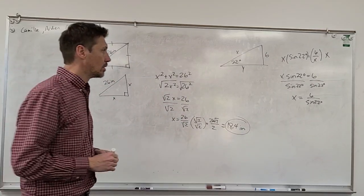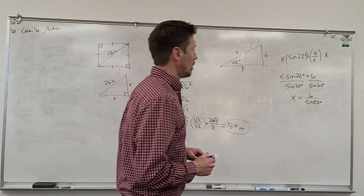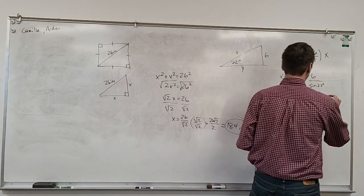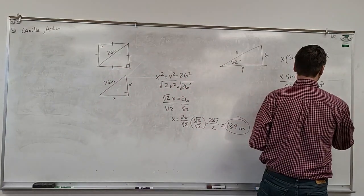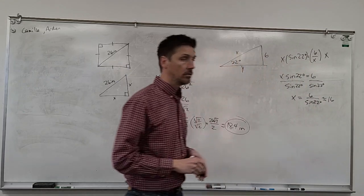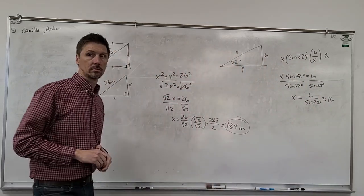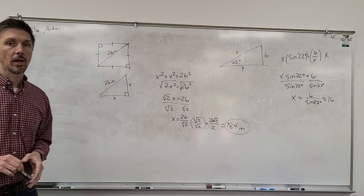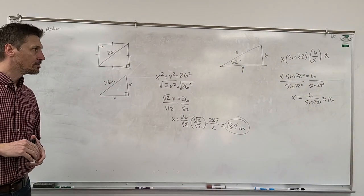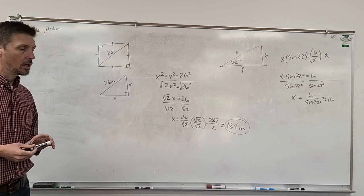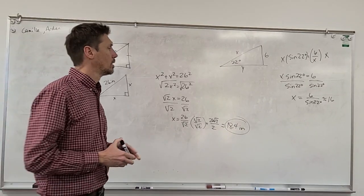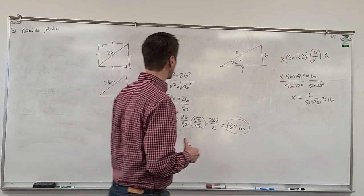What you punch in your calculator at the very end would just be 6 over sine of 22 degrees. Somebody could punch that in. It was 16. Okay — 16.